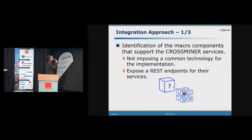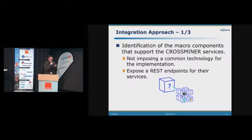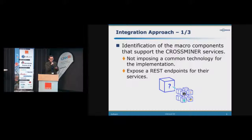To explain the different steps we had to follow: the first one is to identify the main micro-components that support the CrossMiner services. We chose not to impose a common technology for implementing each component — one component could be developed in Java, another in Python, in Go, et cetera. However, the only constraint is that the services exposed by each component should be exposed as REST endpoints.